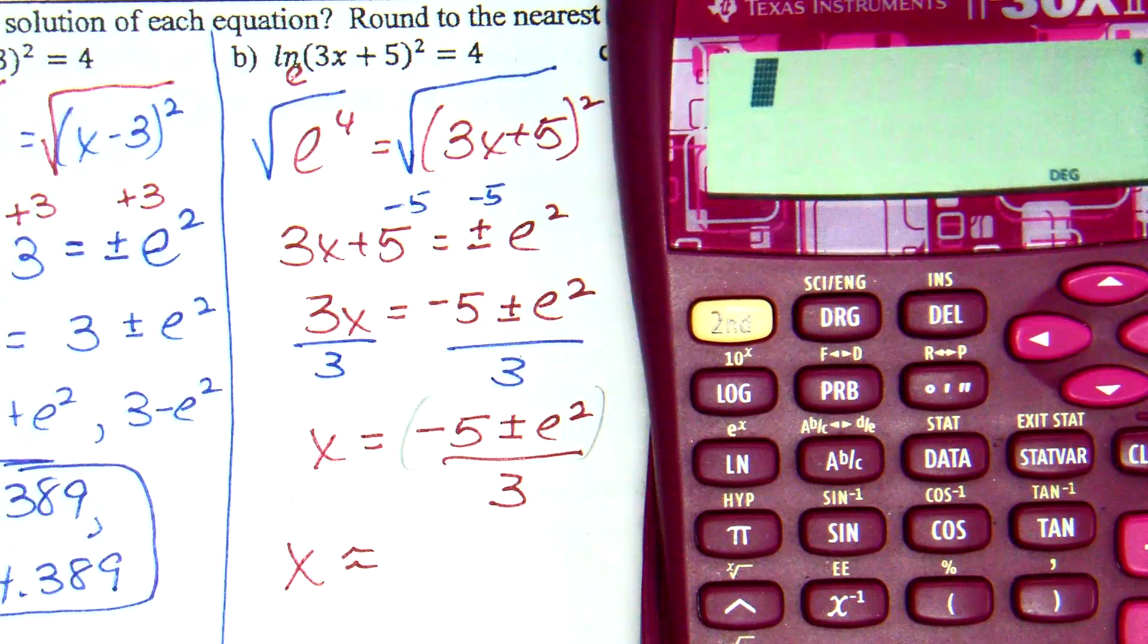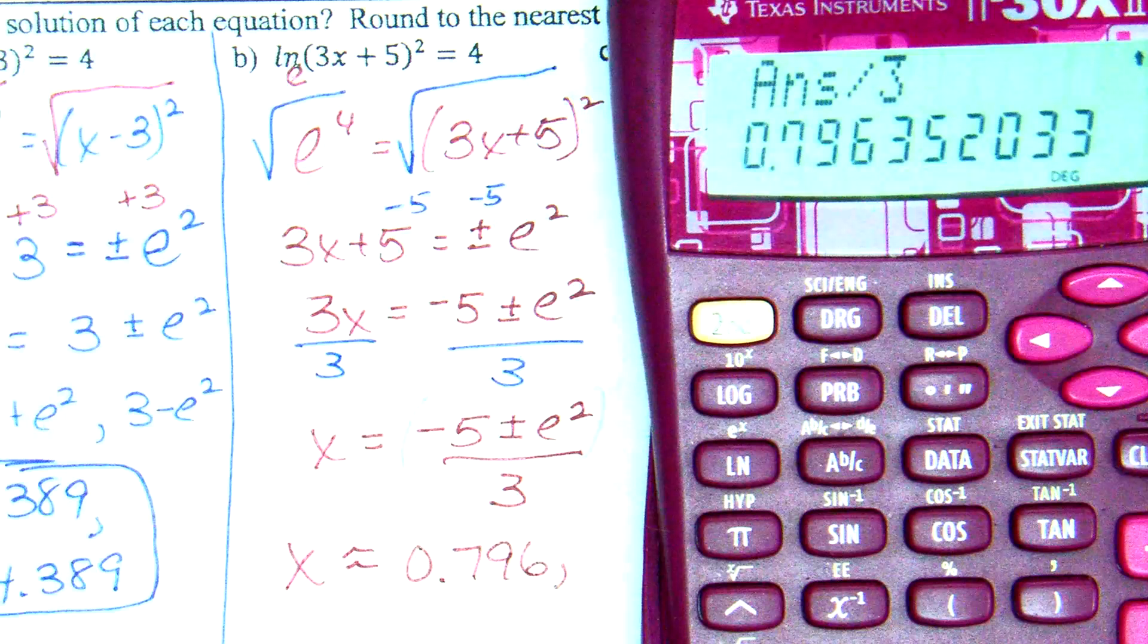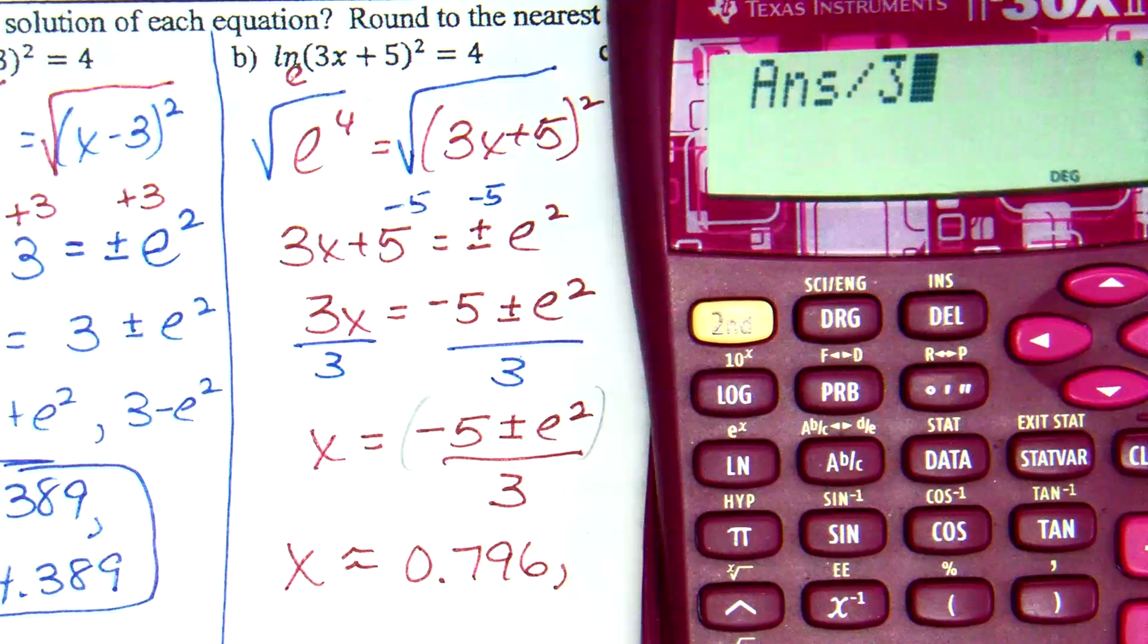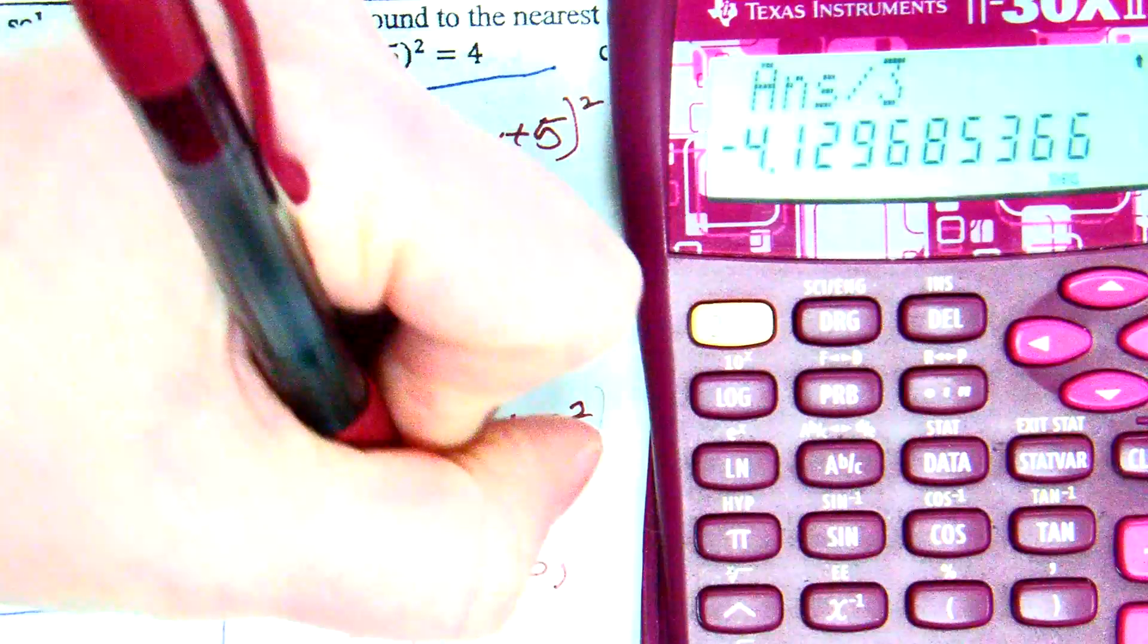3 decimal places? 0.796. 3 tells the 6 to stay. Repeat the process. Negative 5 minus E squared, and then divide by 3. Negative 4.129, but the 6 tells the 9 to go up to a 30.